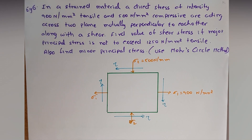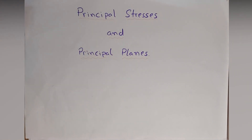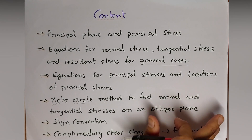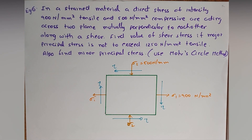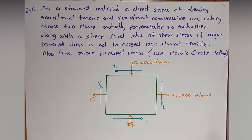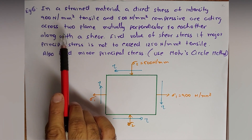Hello friends, welcome to the twelfth part of the topic Principal Stresses and Principal Strain, where we are solving examples. Till now we have solved five different types of examples. Last time we saw how to find normal, tangential, and resultant stresses using Mohr circles method. In this lecture we'll use the same Mohr circles method but for a different case — this time we also have a value of tau, that is shear stress.